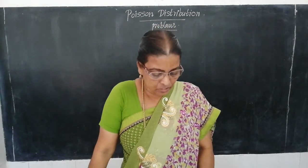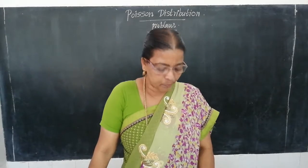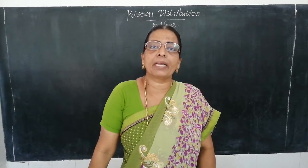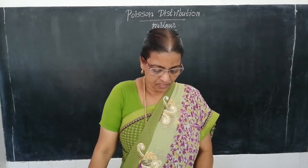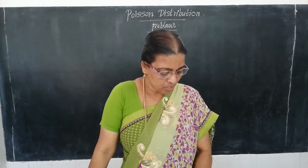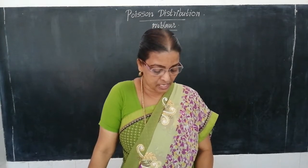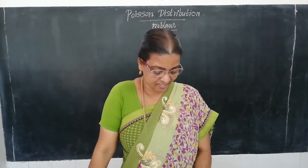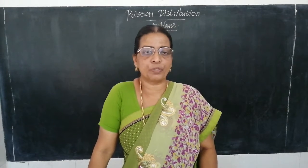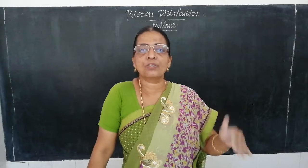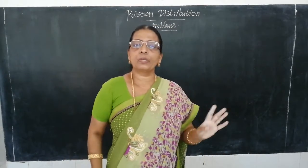Let us start with Example 8.38, page number 8.37. In a Poisson frequency distribution, the frequency corresponding to three successes is two-thirds times the frequency corresponding to four successes. Find the mean and the standard deviation of the distribution. It is an easy problem — understand the problem first and then it becomes straightforward.